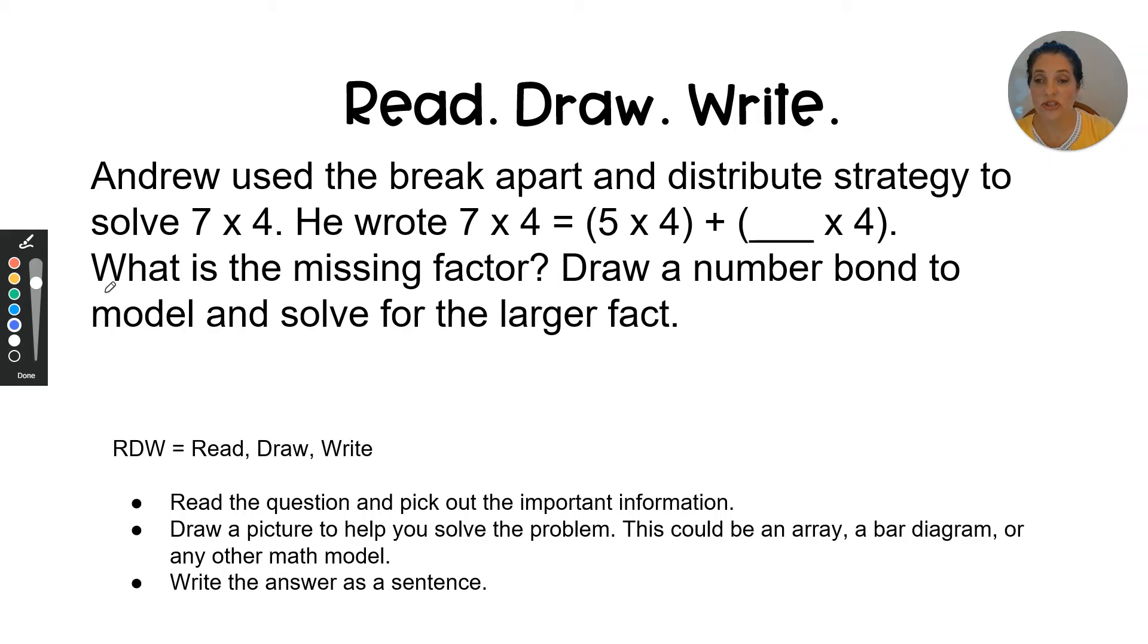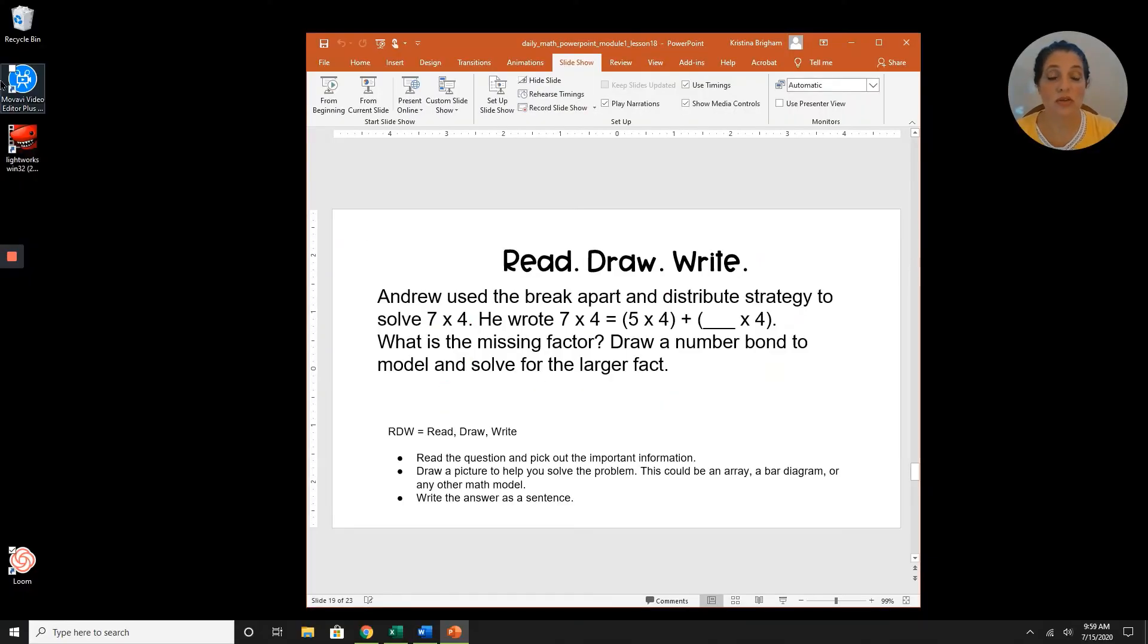Okay, so the question is what is the missing factor? That's the question that we have to answer, and the question specifies that we are to draw a number bond in our answer as well. So where it says draw a picture for the second step, we must draw a number bond. Okay, at this time you can pause the video if you don't have paper and pencil or a whiteboard, or you can go to a Jamboard, and I'll show you how to do that.